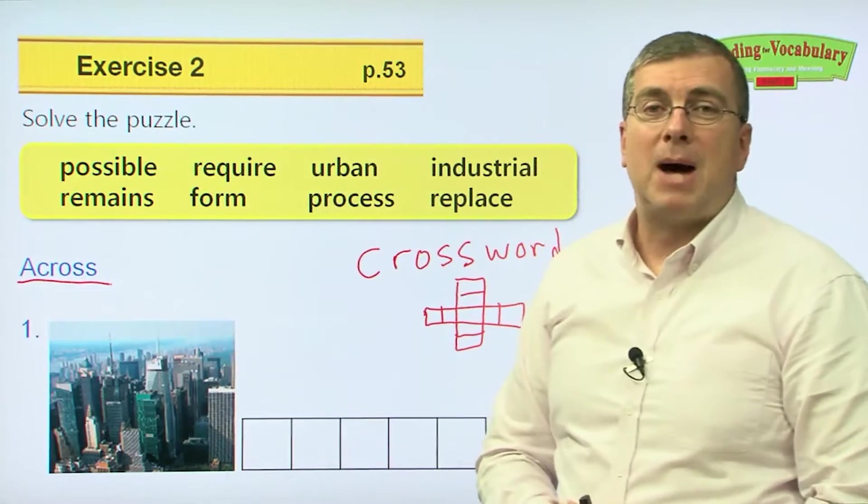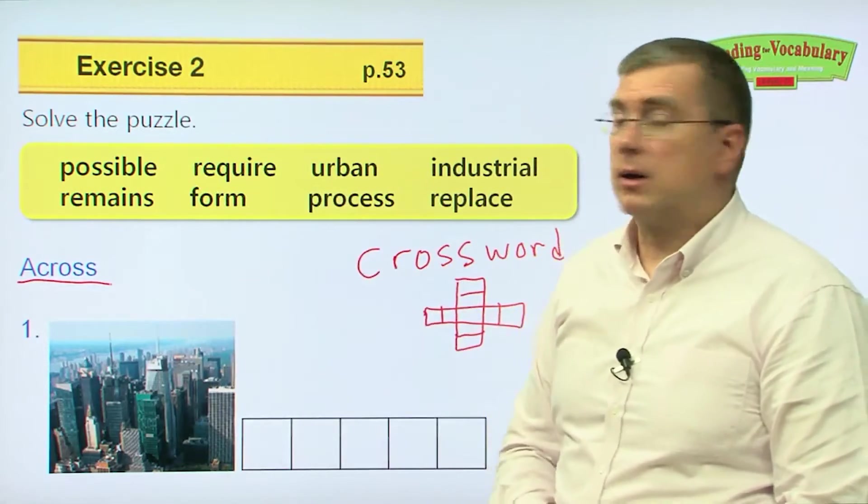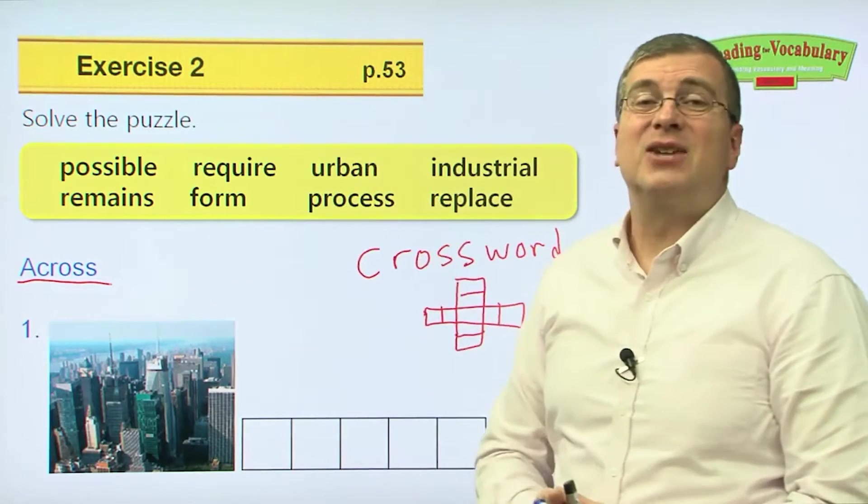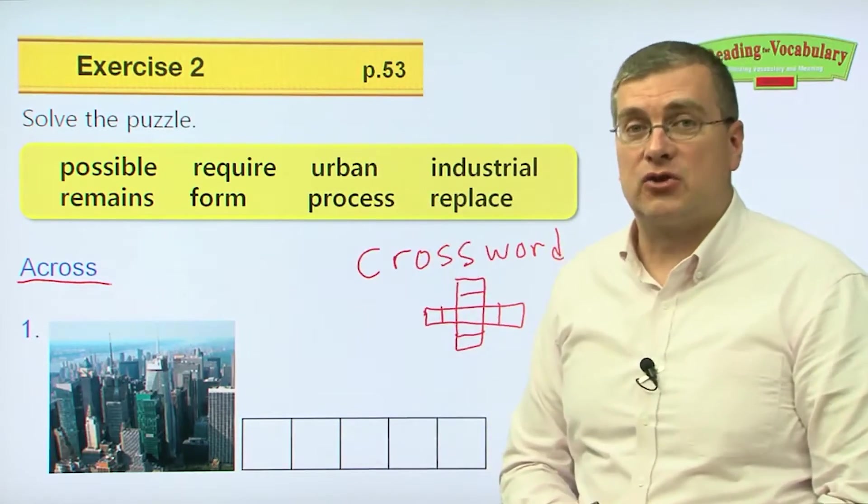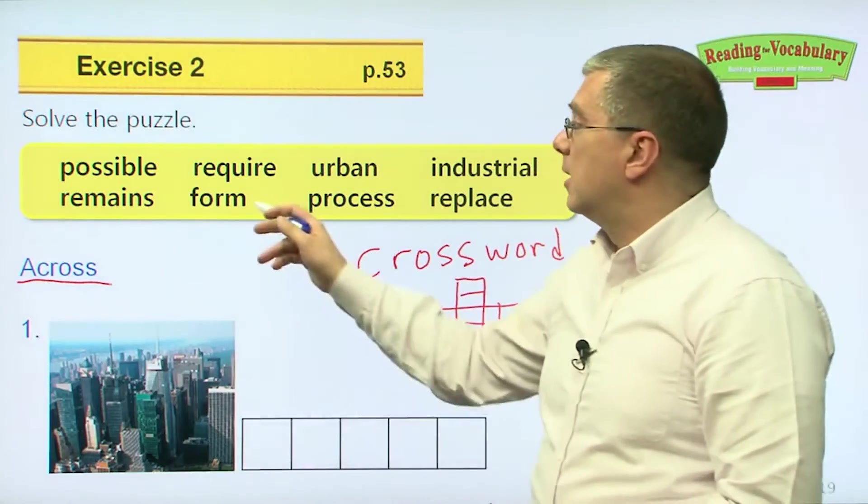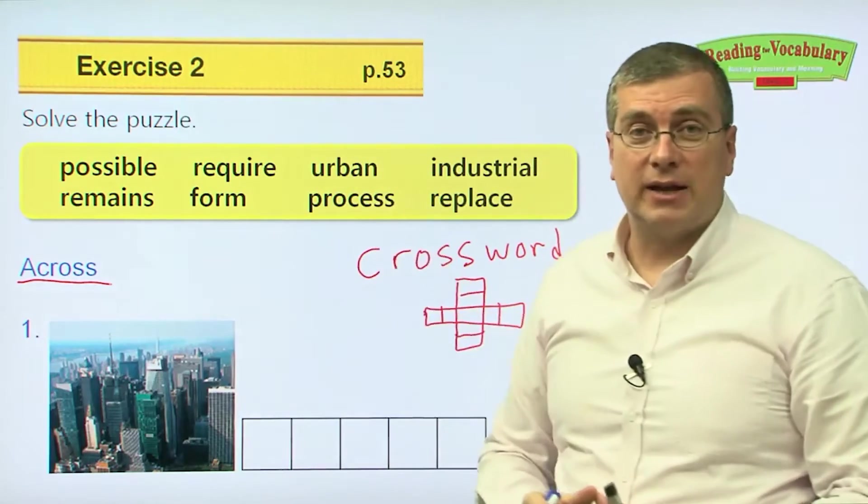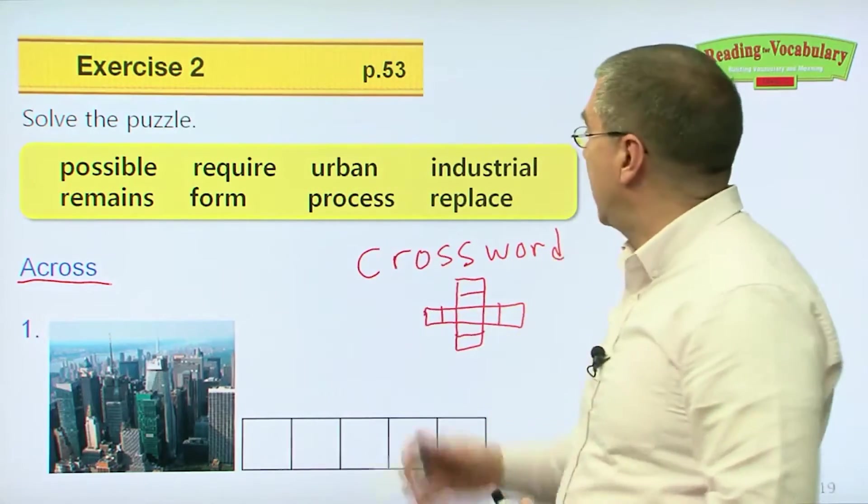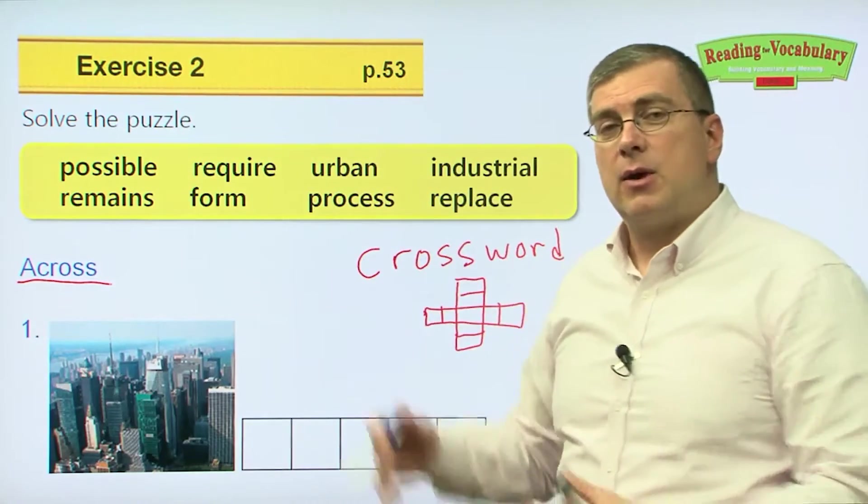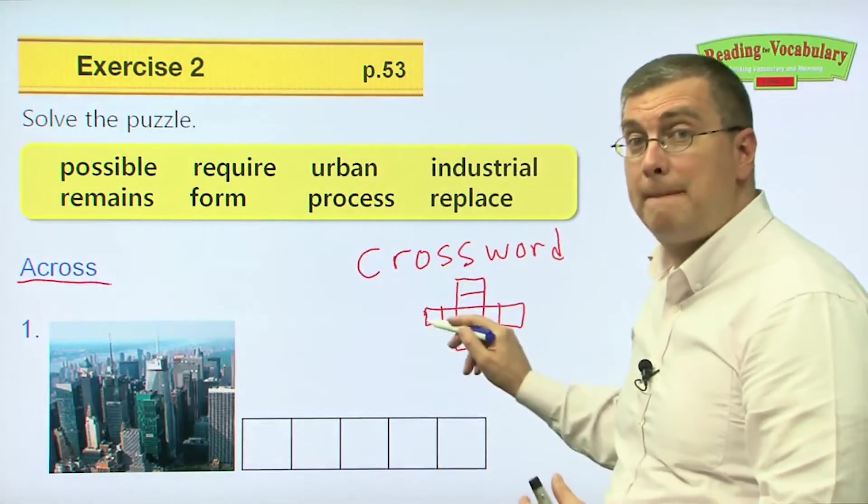Now, these are the words that we're going to put in the crossword puzzle. There are eight words. Let's go over them first. Possible. Require. Urban. Industrial. Remains. Form. Process. And replace. Those are the words we need to fit into the crossword puzzle.